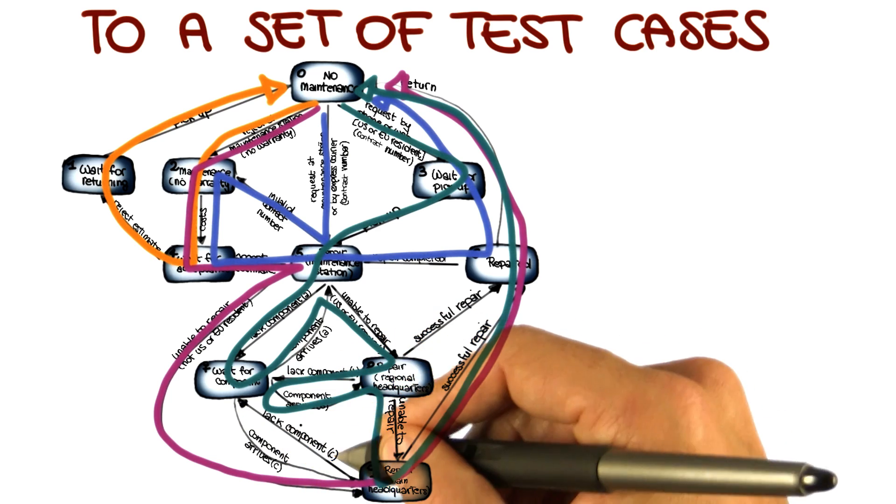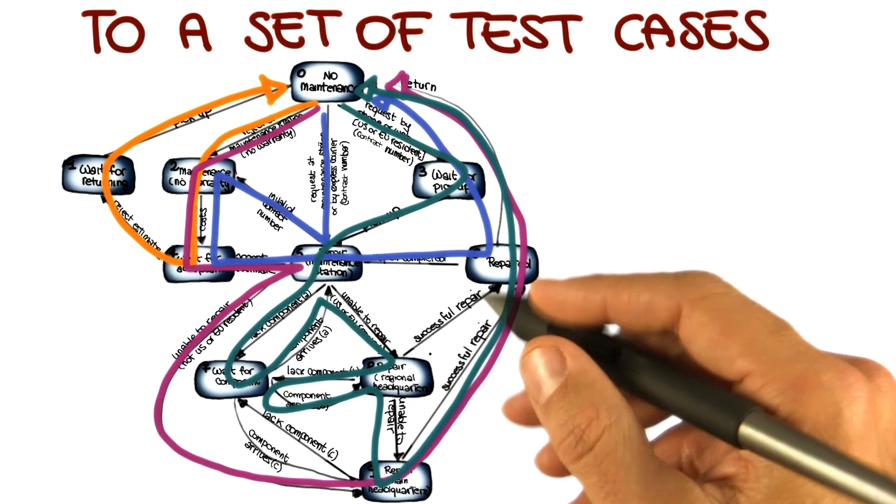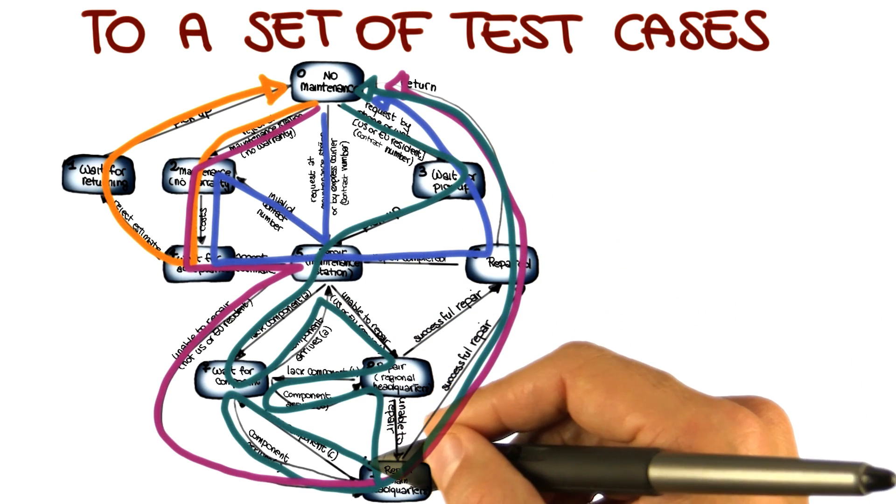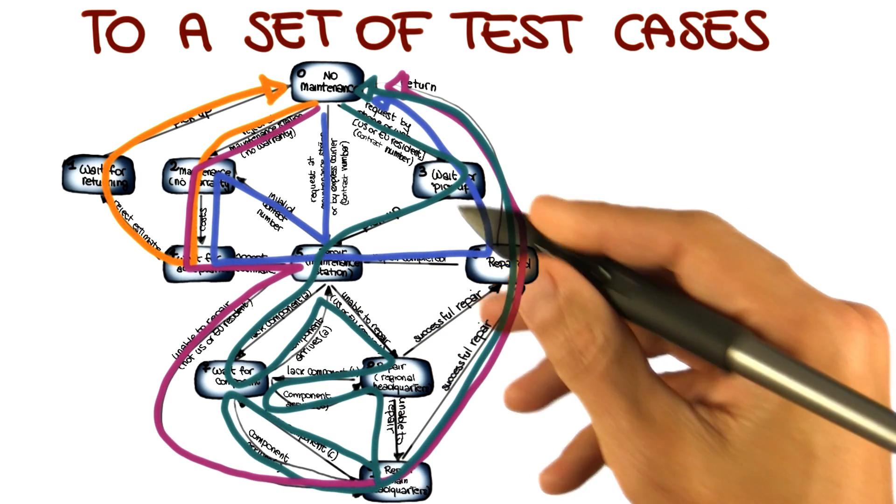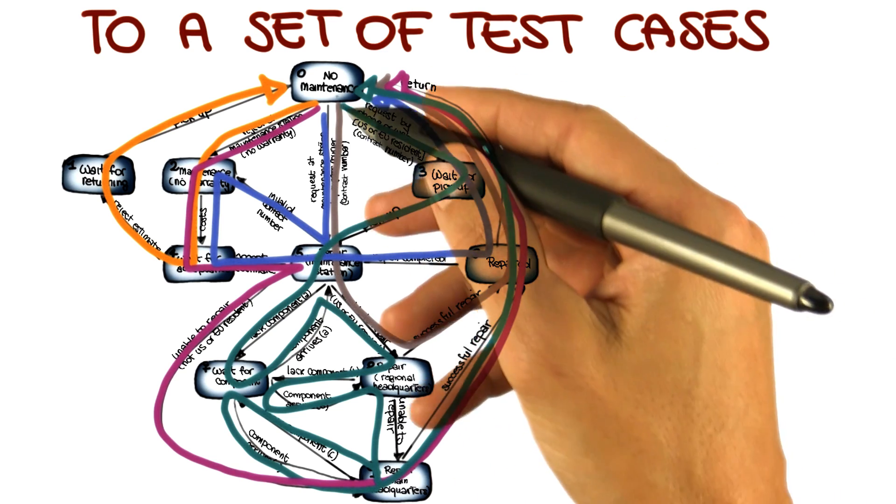So what I can decide to do is generate another test case that covers those, or extend an existing one. For instance, I could extend this test case by adding a visit to the state before going back to these two. Alternatively, I could also generate new test cases, such as this one, to cover the missing transitions.